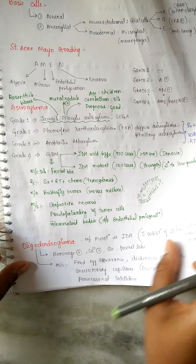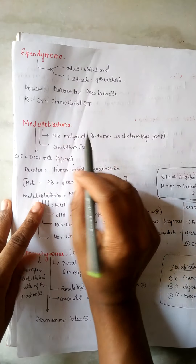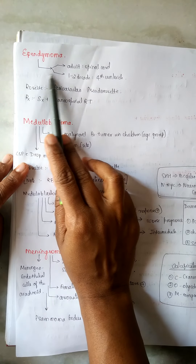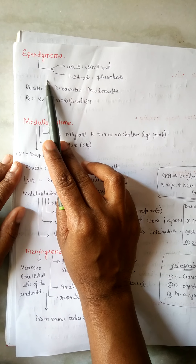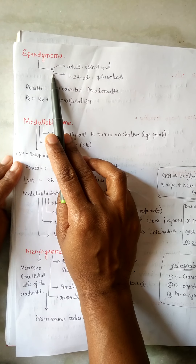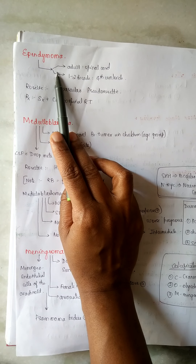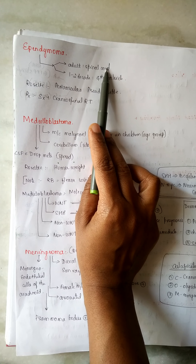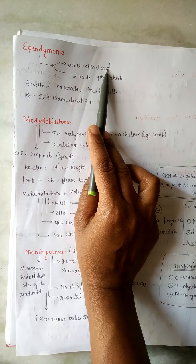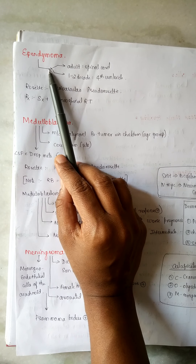Next is ependymoma, which arises from ependymal cells. It can arise from the ventricle lining or the spinal cord. In adults, the most common site is the spinal cord, but in the first to second decade of life, it is the fourth ventricle.